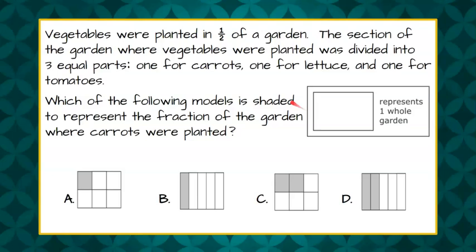Welcome back. So we're first going to go back and understand that vegetables were planted in half of the garden and this box right here, this rectangle, represents one whole garden. So first let's divide this into half. So we have half the garden for vegetables.